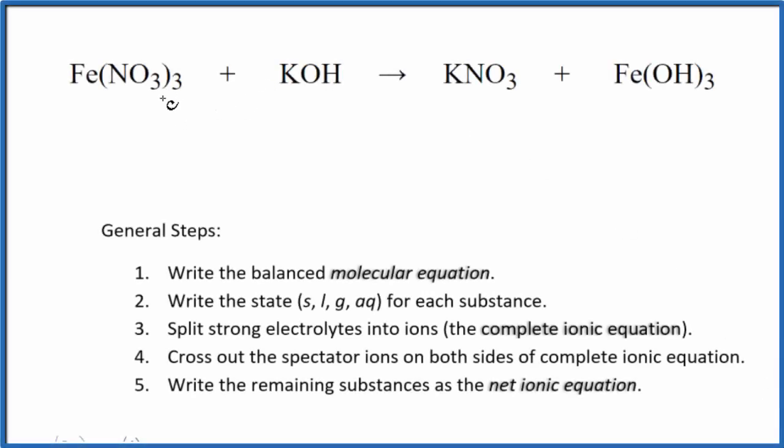In this video, we'll write the balanced net ionic equation for Fe(NO3)3 plus KOH. This is iron 3 nitrate plus potassium hydroxide. First thing we need to do is balance the molecular equation.